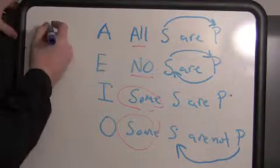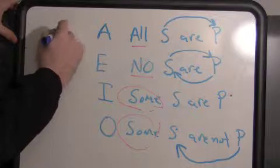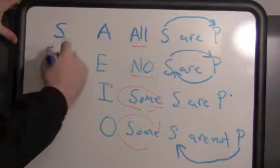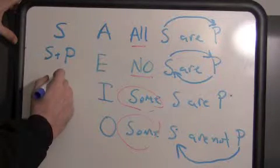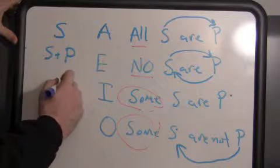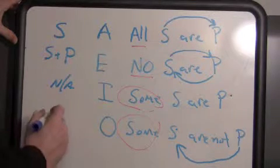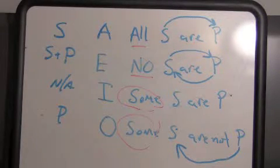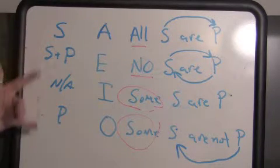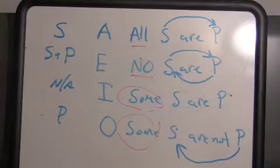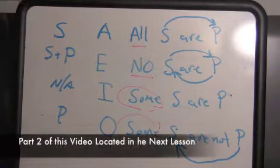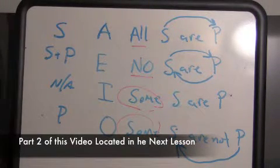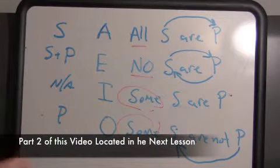So to summarize: in the A statement, S is distributed; in the E statement, both S and P are distributed; in the I statement, nothing is distributed; and in the O statement, P is distributed. This may seem tedious, but it becomes important as we go through the logic book, because distribution ultimately tells us something about the validity of arguments.